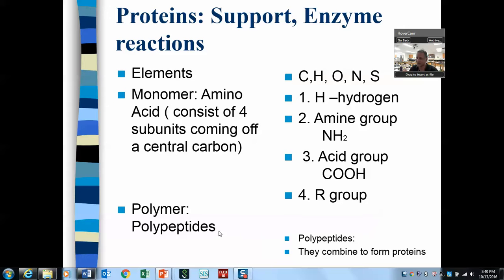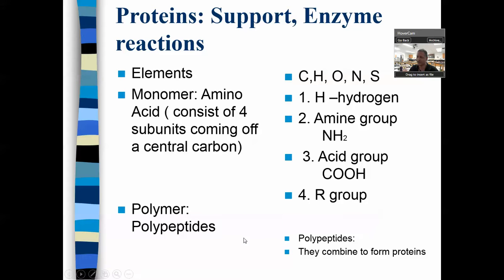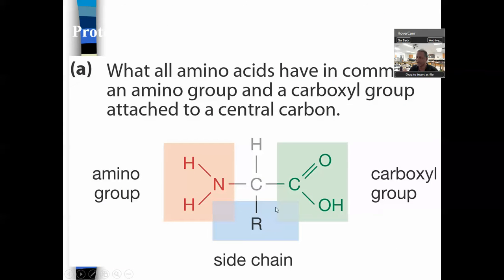The polymer for proteins is actually the polypeptide — it's several amino acids combining. Looking at the structure, we have four parts: the amine group, the acid group which is actually carboxylic acid — these two together make up the name amino acid — a standard hydrogen, because carbon has four valence electrons and four covalent bonds equally spread out, and the R group.